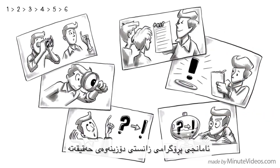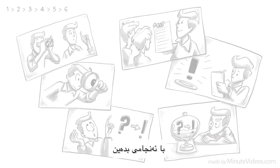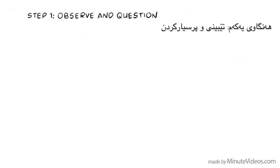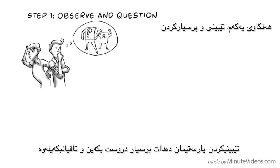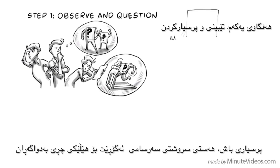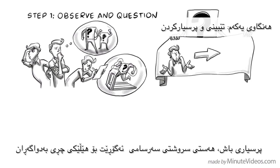The goal of the scientific method is to find out the truth. Let's try. Step 1: Observe and question. Observation helps us formulate challenging questions that you will be able to test. A good question converts the natural sense of wonder into a focused line of investigation.